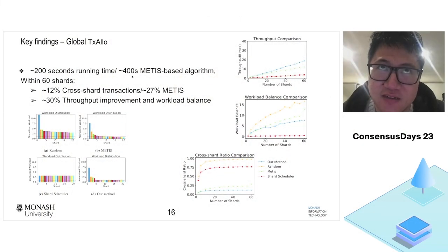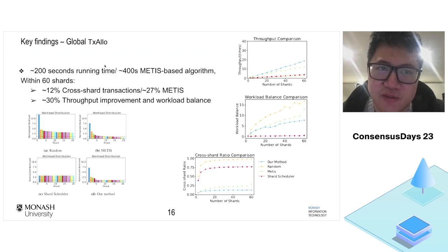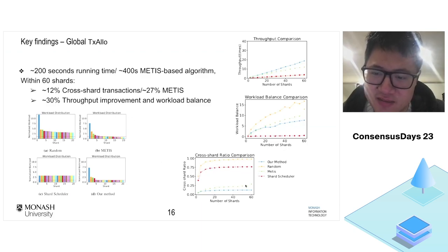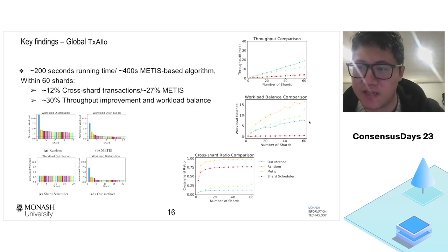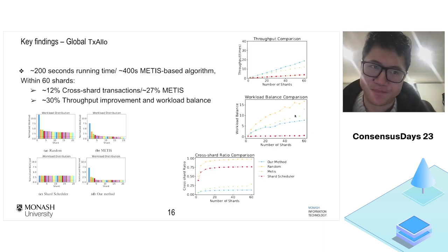For the running time question: our method achieves about 200 seconds running time compared to the METIS-based algorithm — METIS is a very well-known graph partition algorithm claimed to be very fast and used for similar problems. We are about two times faster than METIS and can reduce cross-shard transactions to about 12% even with 60 shards. Our method consistently achieves low cross-shard transaction rate and maintains workload balance compared to other graph-based methods.